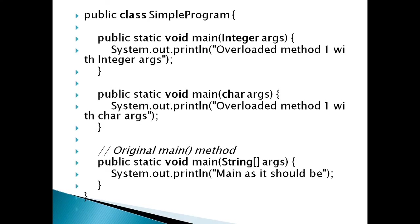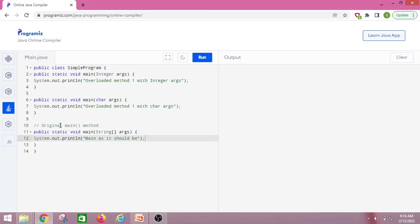Here we have a program — public class SampleProgram. We can see one main method with integer arguments, one main method with character arguments, and one main method with the exact original signature — String array arguments. Let us see how we can run this.